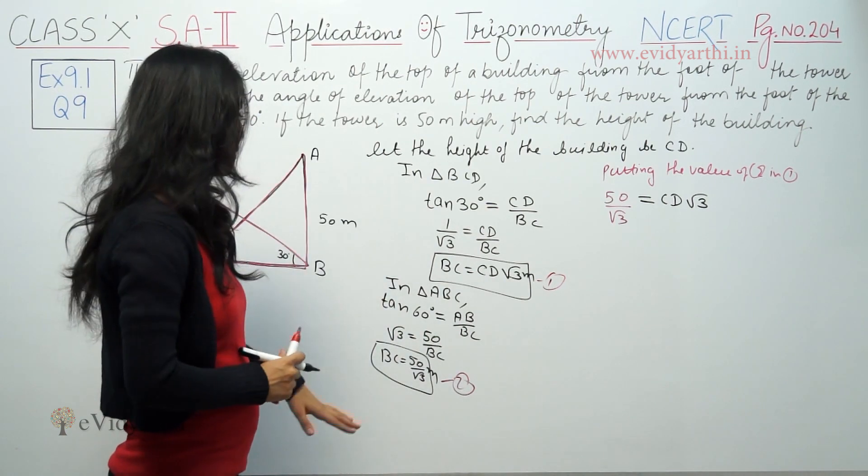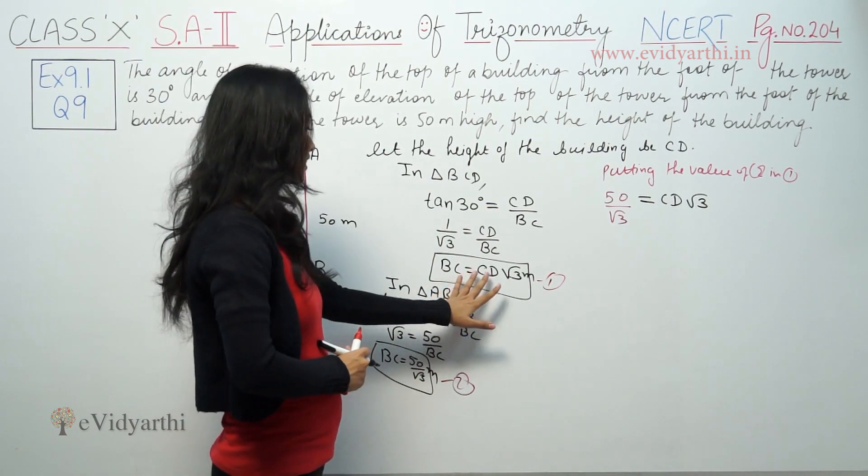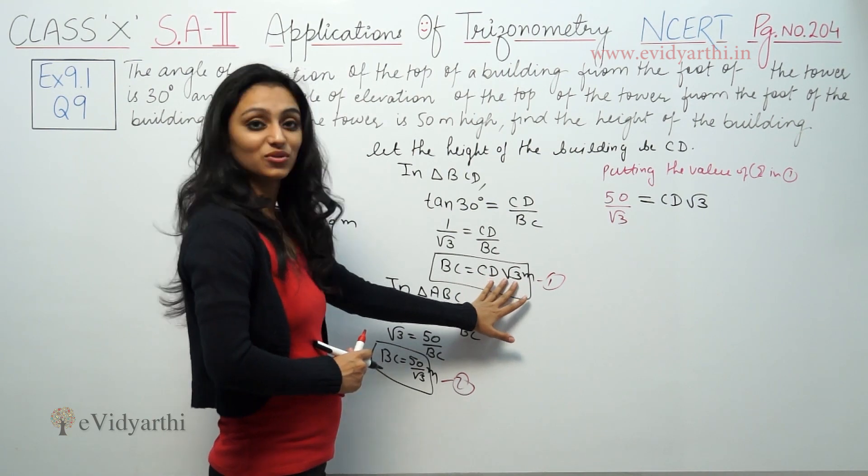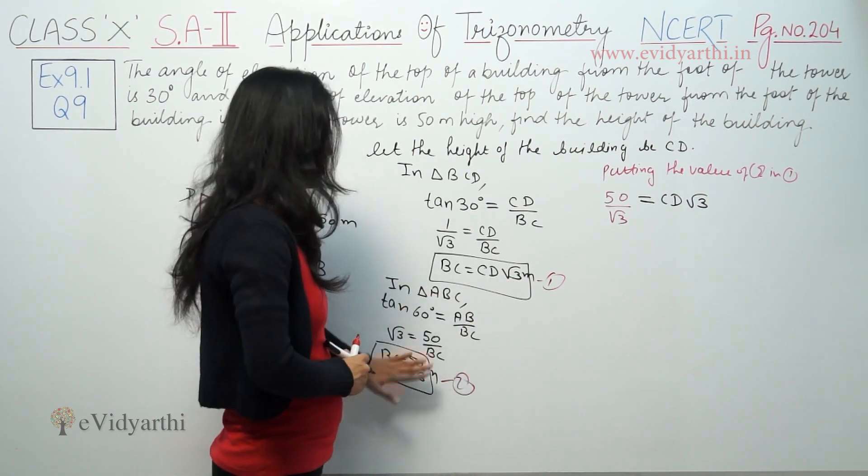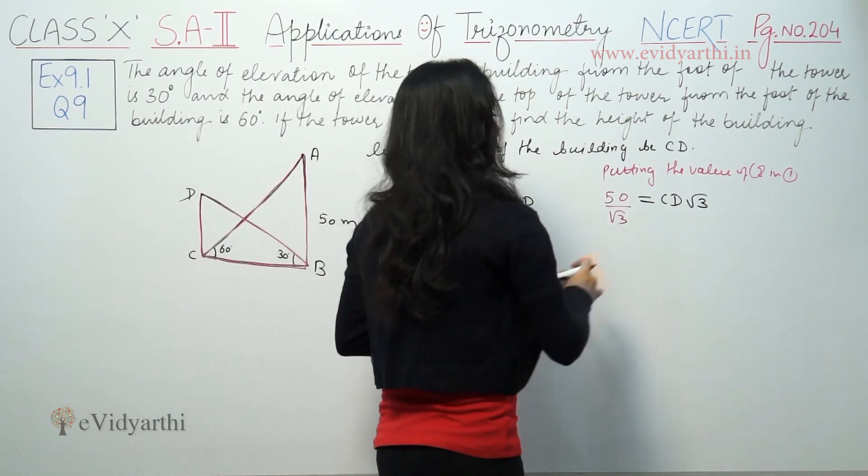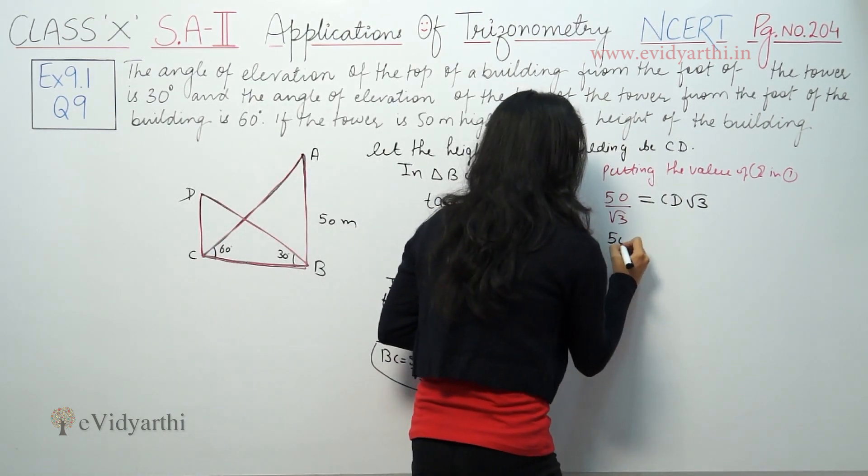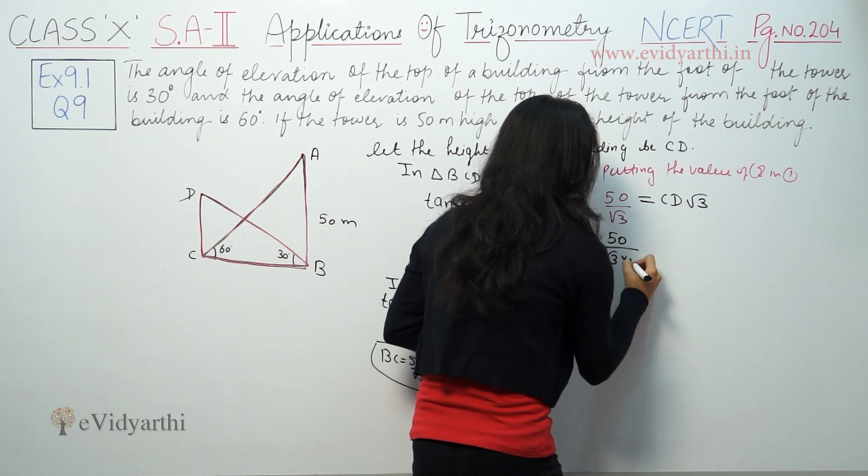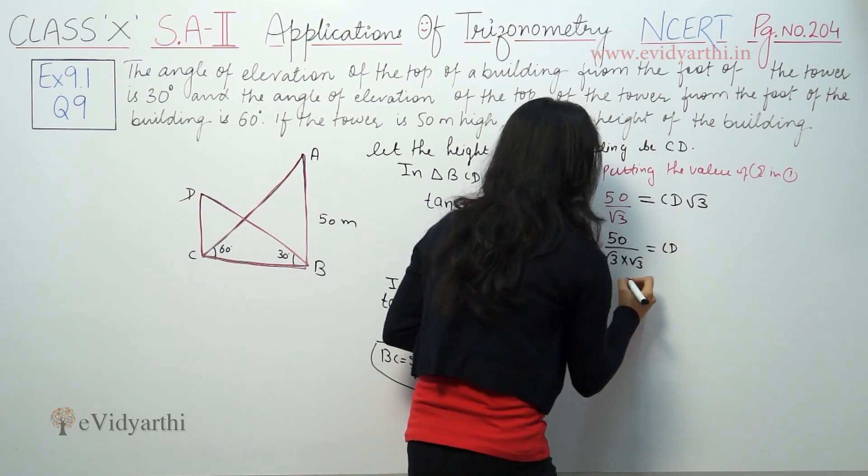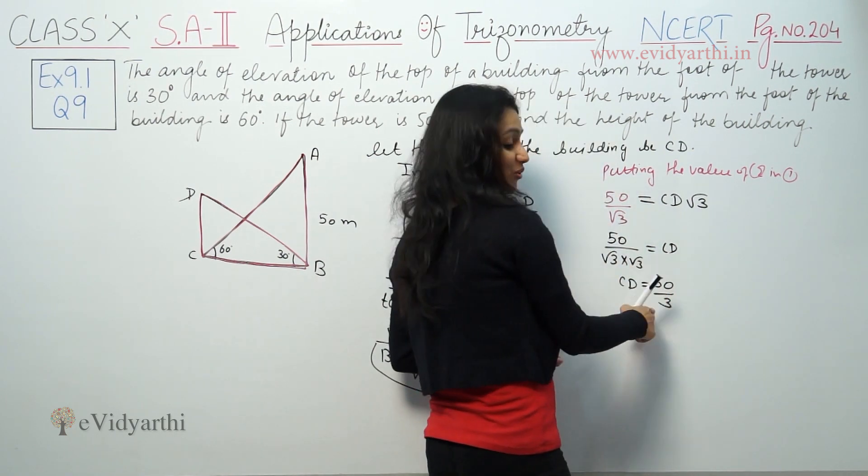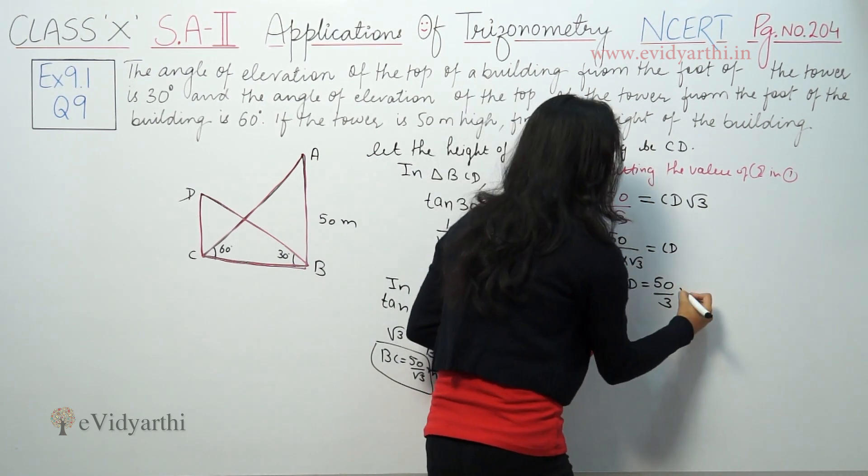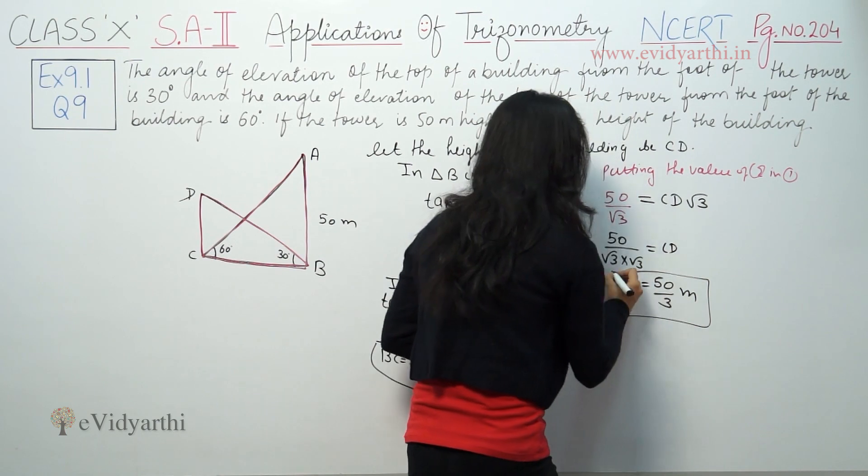BC is 50 by root 3, and from the first equation, BC equals CD root 3. So 50 by root 3 equals CD root 3. Solving for CD, we get the value.